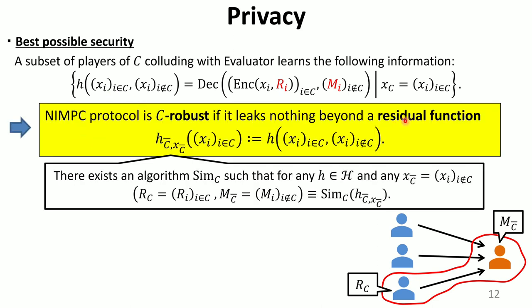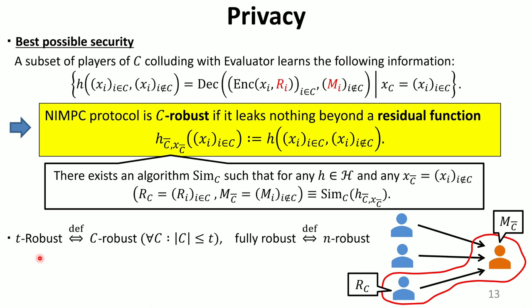We require that a protocol leaks nothing beyond that information, which is why we call that privacy requirement a best possible security. Formally, we define a residual function whose input variables are those corresponding to corrupted players, and whose output is a value of H fixing the inputs of honest players. We say an NIMC protocol is C-robust if it leaks nothing beyond the residual function, formalized via a simulator that perfectly simulates the adversary's view from oracle access to the residual function. We also say a protocol is T-robust if it is C-robust for all subsets of size at most T, and fully robust if it is N-robust.